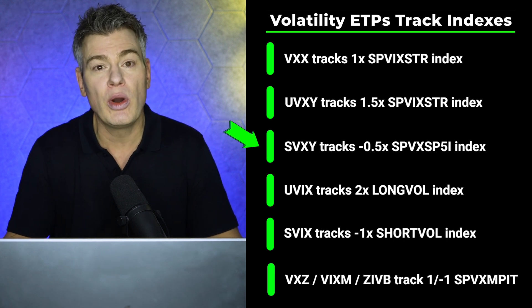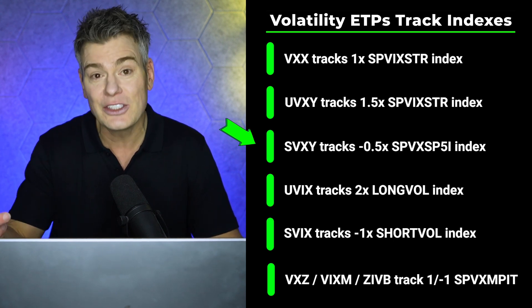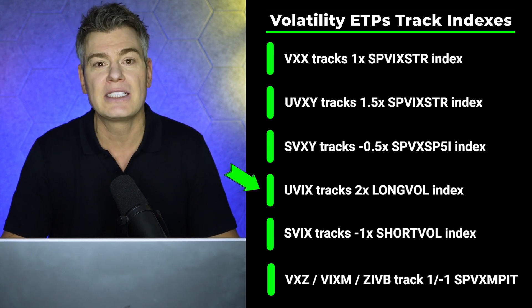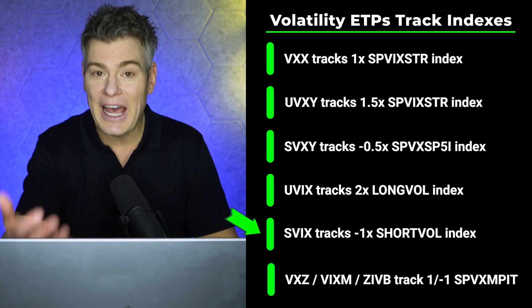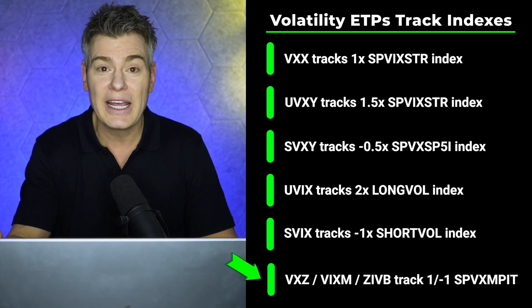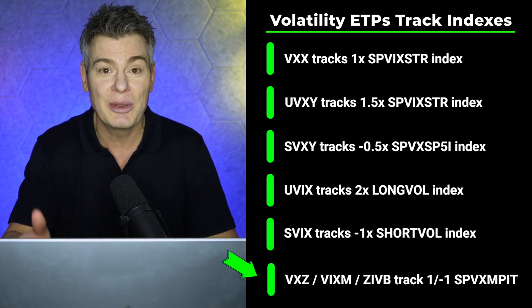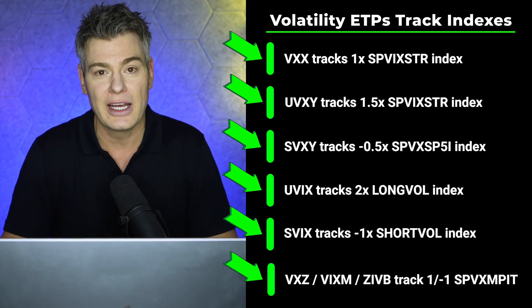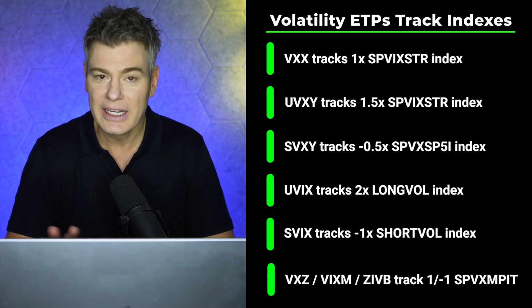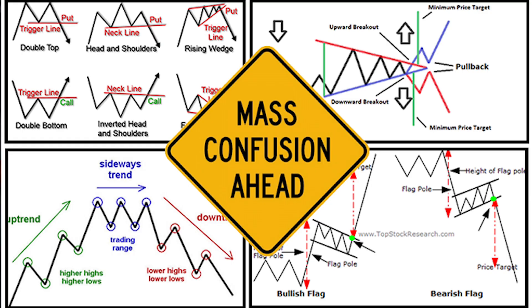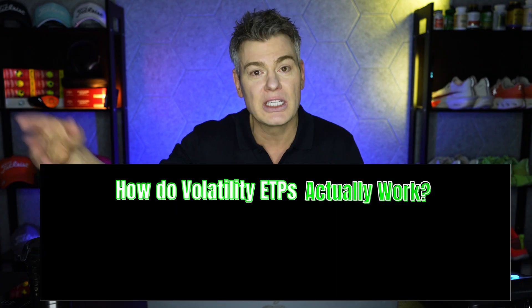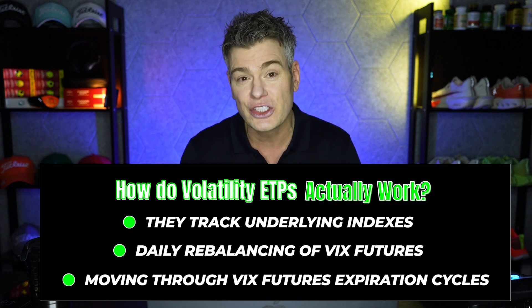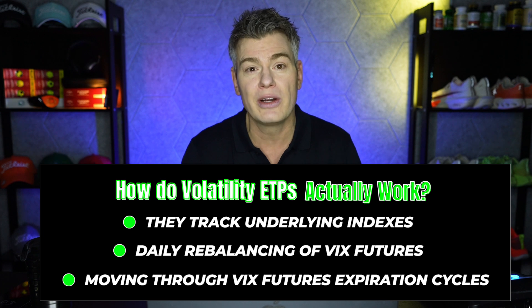The UVXY tracks that same SPVIX STR index at 1.5 times leverage. The SVXY is a minus 0.5 times short volatility ETF and it tracks an index called the SPVIX SP5I. The new UVX, the 2 times long volatility product, tracks an index called Long Vol. The minus 1 times leverage SVX tracks an index called Short Vol. The VXZ and VIXM track with 1 times leverage the SPVX MPIT index. Every volatility product tracks an underlying index — you can see supply and demand has nothing to do with this. It is a preset methodology. This means your technical analysis won't work with volatility ETPs. They are just derivatives of something else. We need to understand how the volatility ETPs work so that we can use that information and actually predict their forward movement based on the current volatility environment.